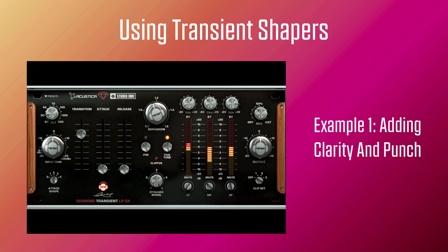In example one, I use Acoustica Audio's Diamond Transient tool to add clarity and punch to a staid drum beat. First, the dry version. And now the processed version.